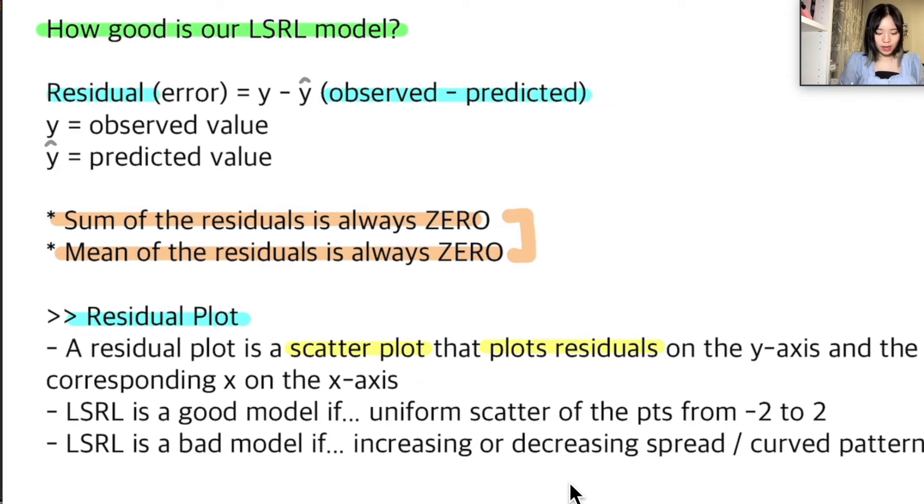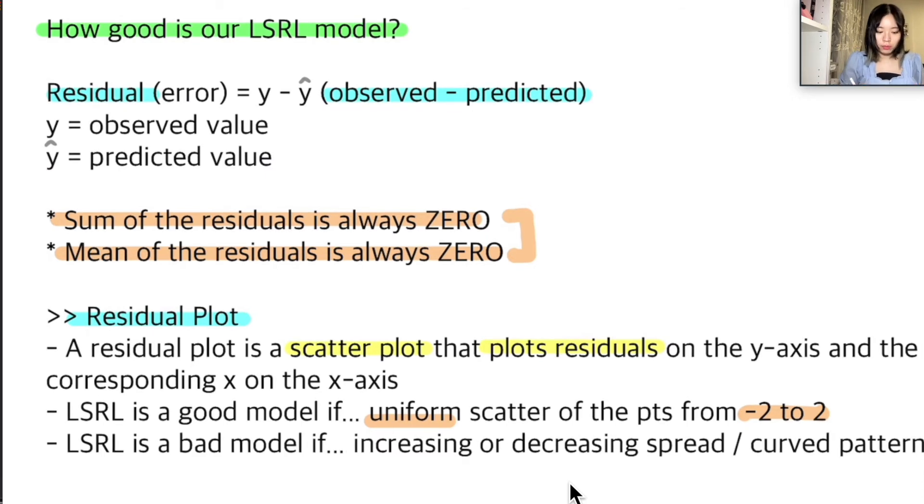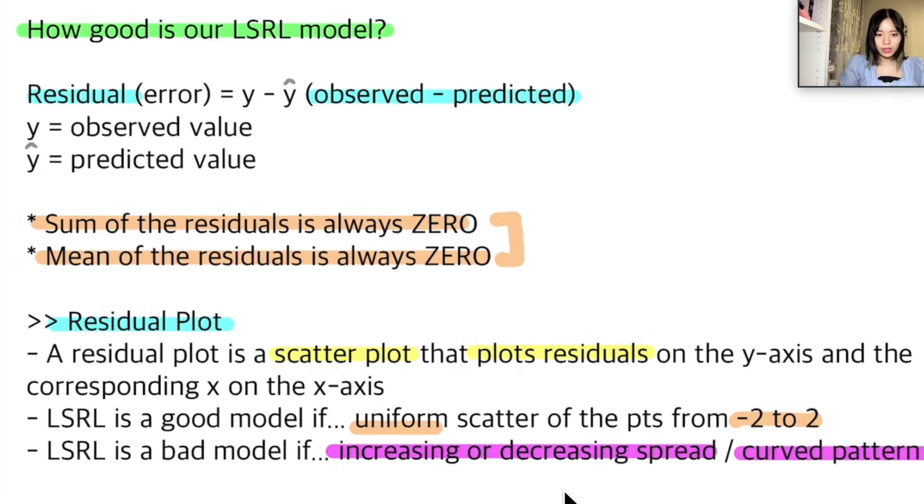And you can say that our LSR model is a good model if the residual plot shows a uniform scatter of the points from minus 2 to 2. And you'll say that our LSR is a bad model if the residual plot shows the following patterns, which should be whether if it is increasing or decreasing spread about the line as x increases or if it has a curve pattern.